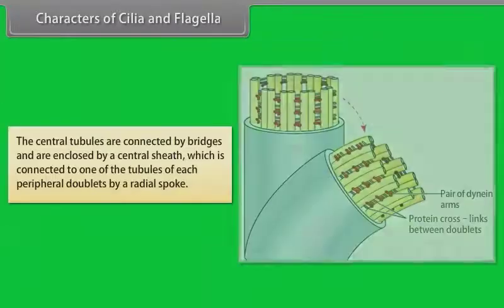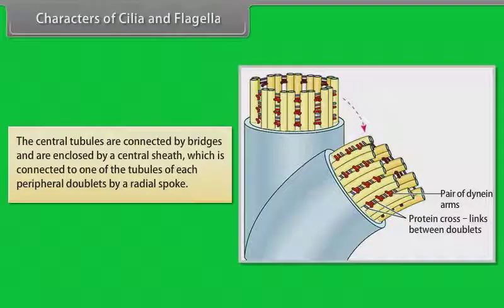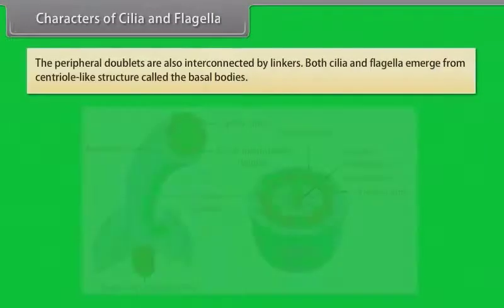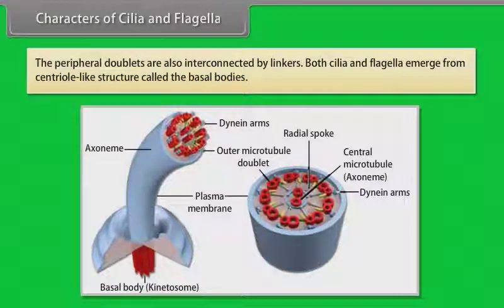The central tubules are connected by bridges and are enclosed by a central sheath, which is connected to one of the tubules of each peripheral doublet by a radial spoke. The peripheral doublets are also interconnected by linkers. Both cilia and flagella emerge from a centriole-like structure called the basal bodies.